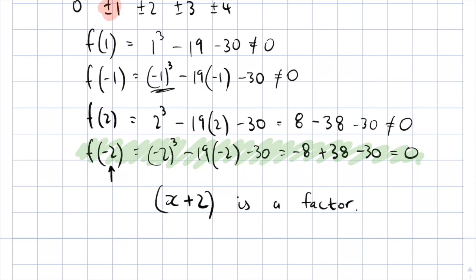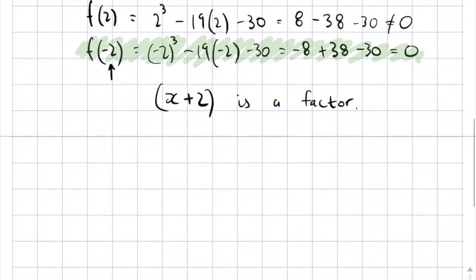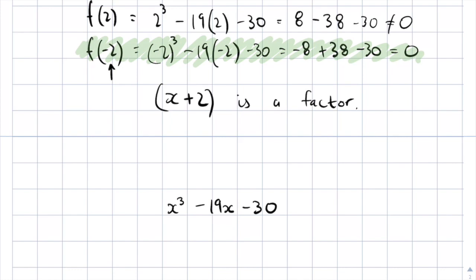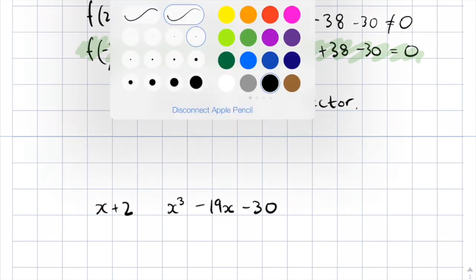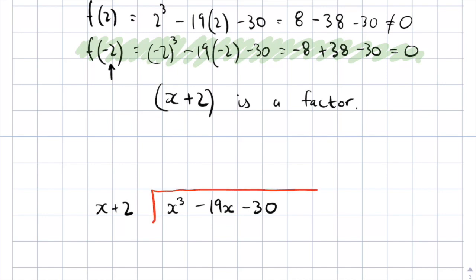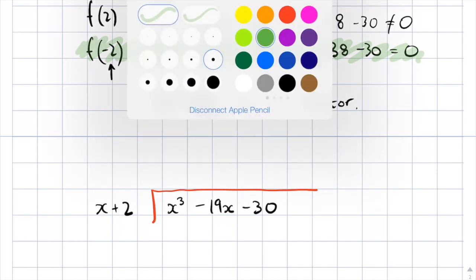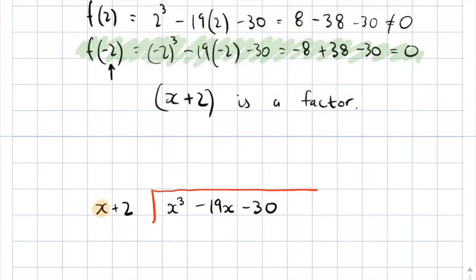From f(−2) = 0 we conclude that x plus 2 is a factor — because it was negative 2, we write x plus 2. Now we can go into the steps of long division. Our equation is x cubed minus 19x minus 30, with no x squared term. We set this up as a division, dividing by x plus 2, just like you would set up an arithmetic long division.